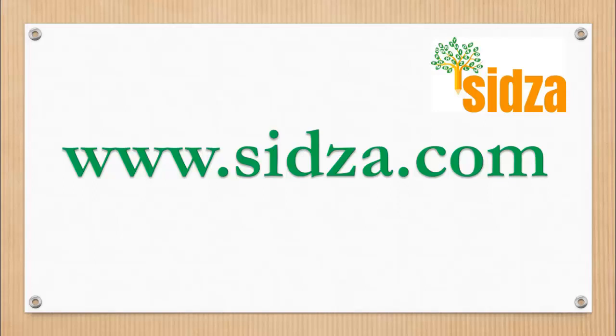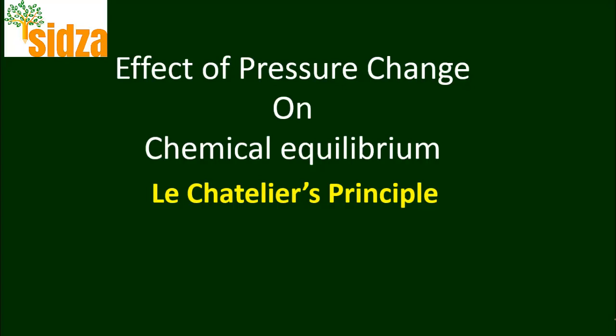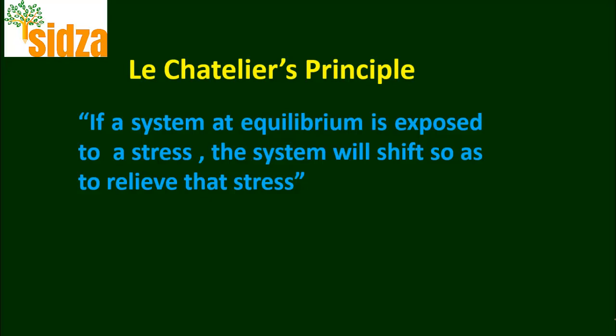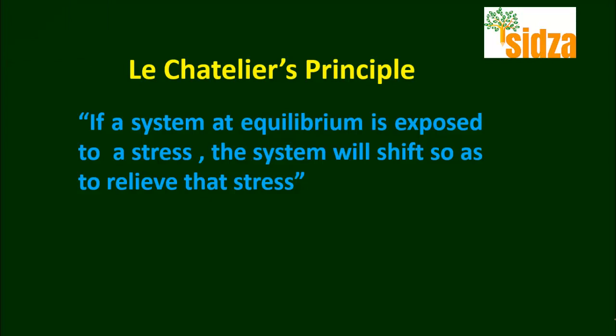Welcome to SIDSA.com. Today we look at the effect of pressure change on chemical equilibrium. As per Le Chatelier's principle, if we have an equilibrium system and we try to impose any kind of stress on the equilibrium, the system will react in a way so as to relieve that stress — meaning the equilibrium will react in a way so that it can undo the change.